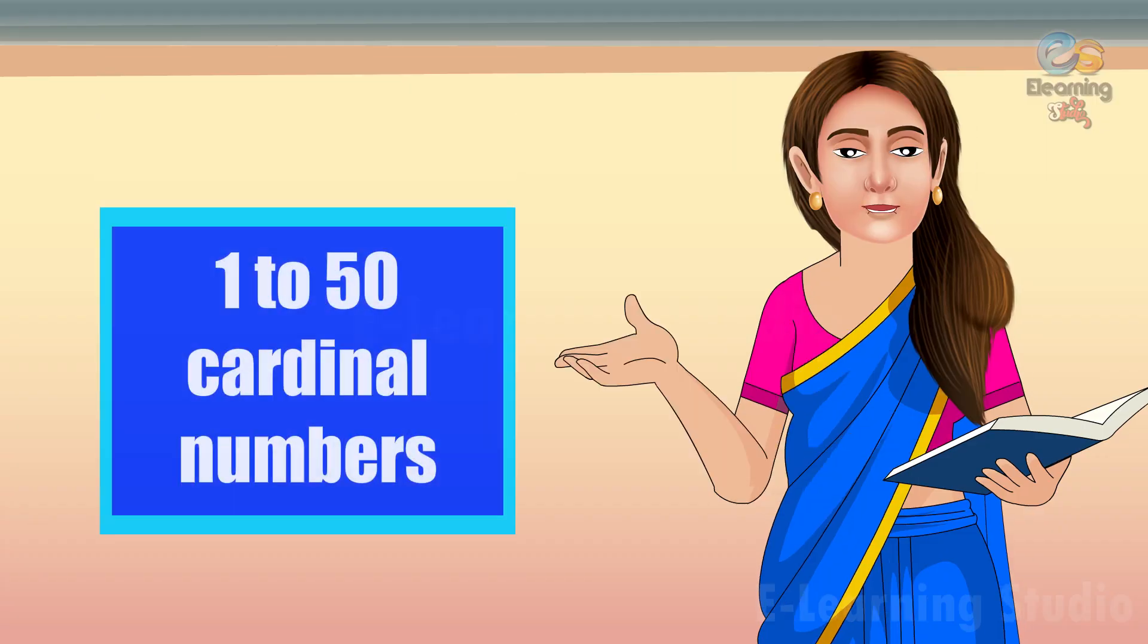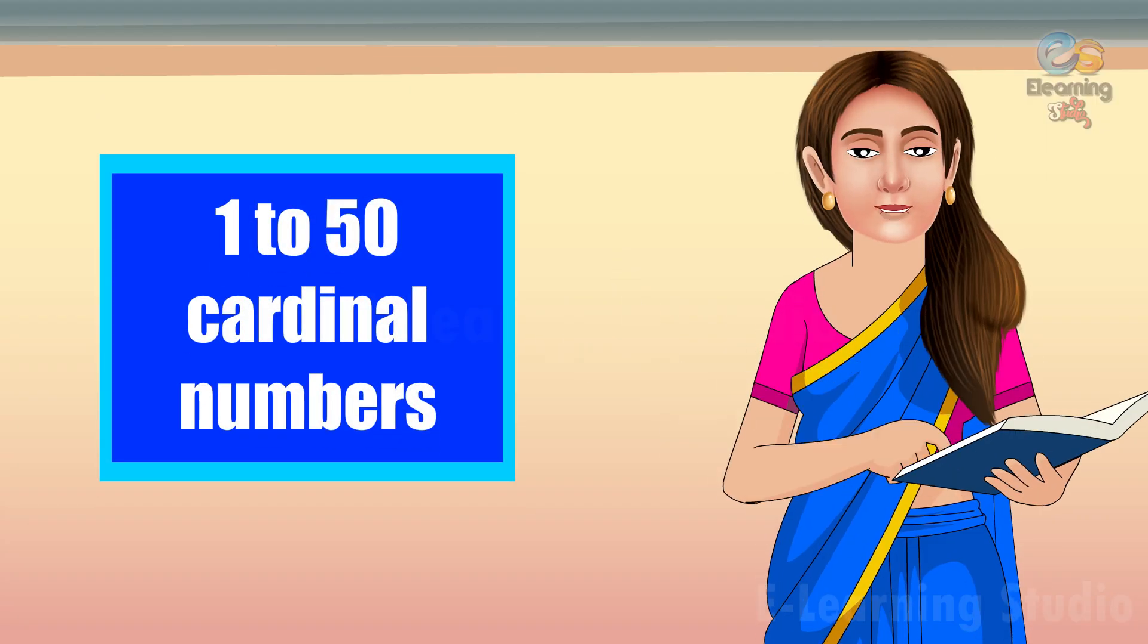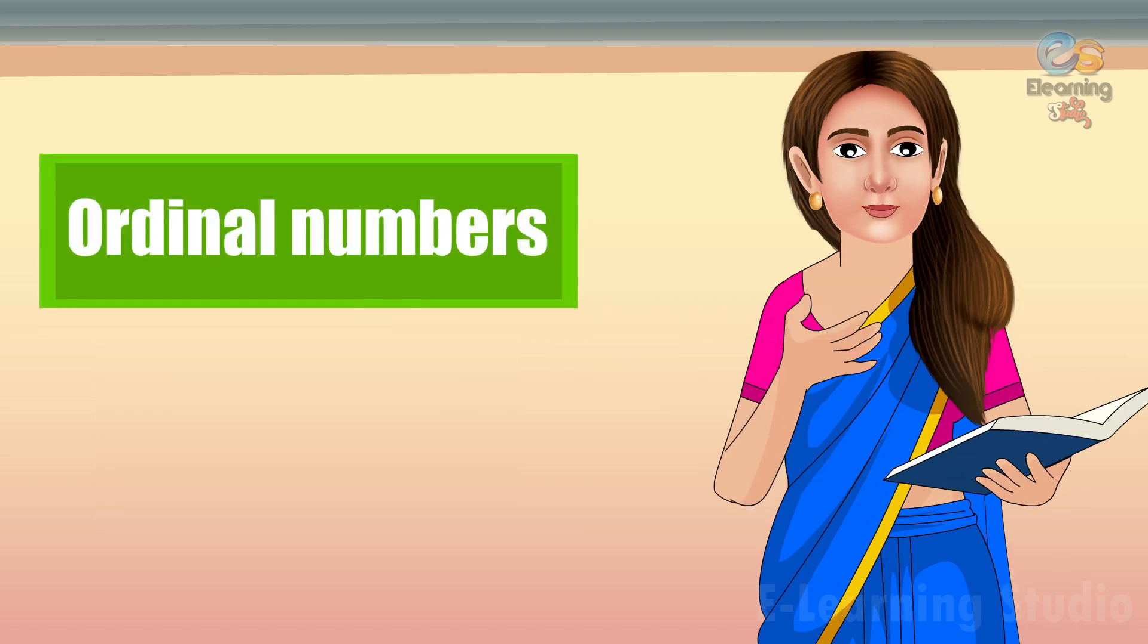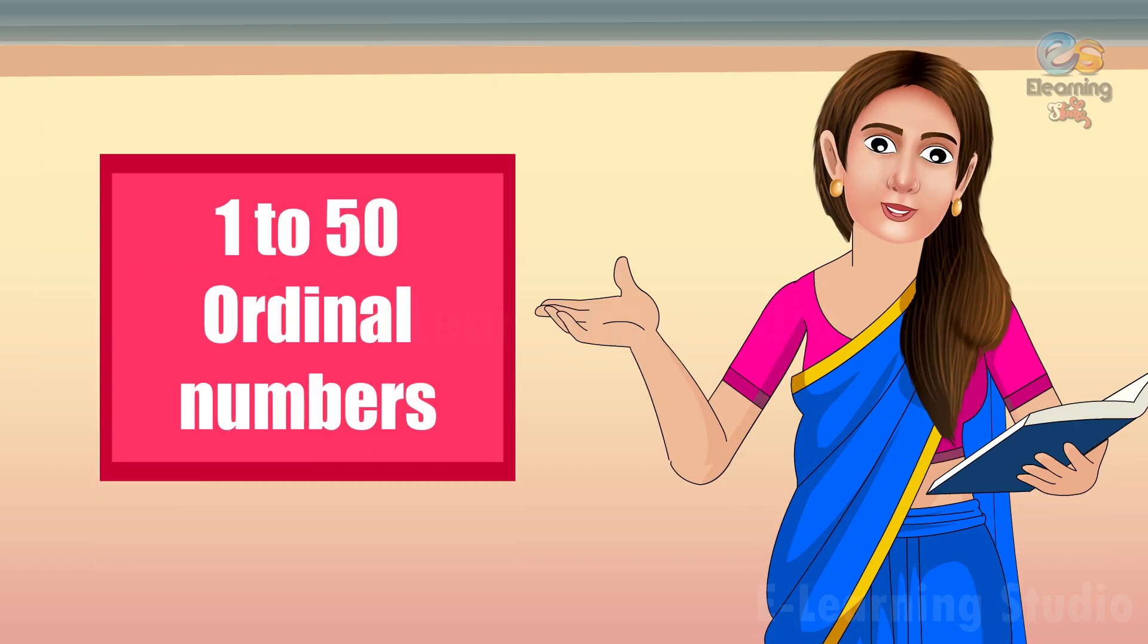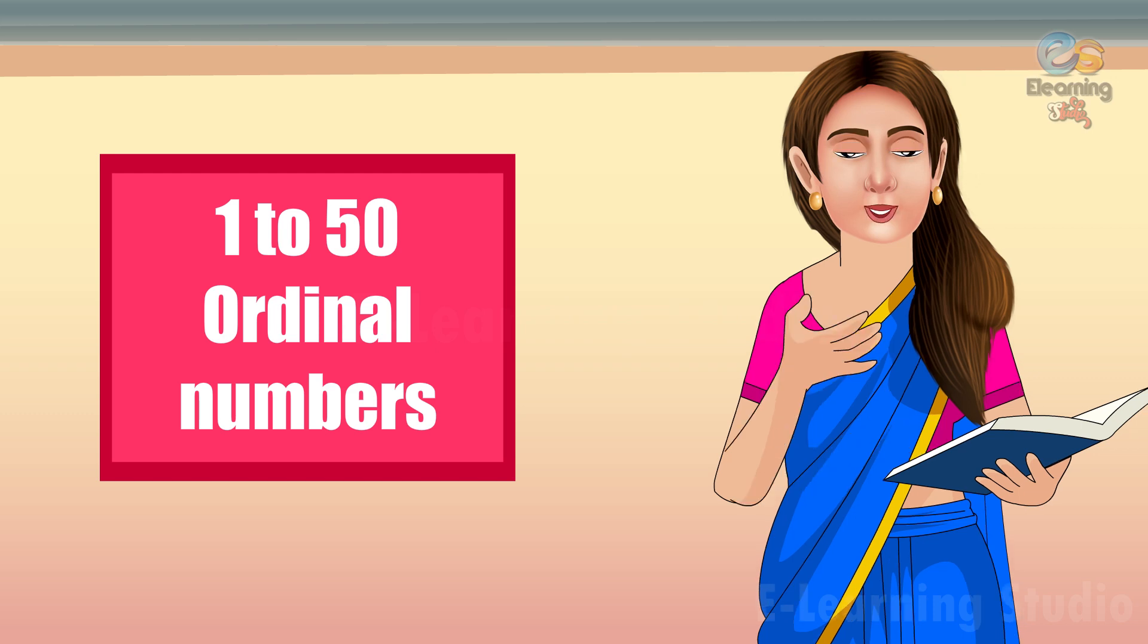So children, 1 to 50 cardinal numbers you already know very well. So we just learn about ordinal numbers. How we write and read ordinal numbers? Now let's see the list of 1 to 50 ordinal numbers on the screen.